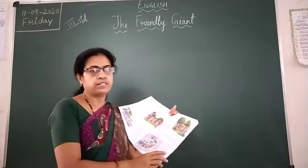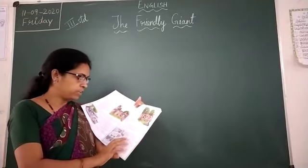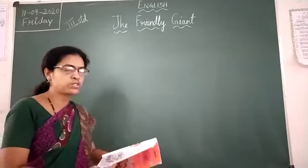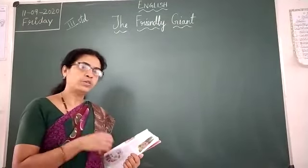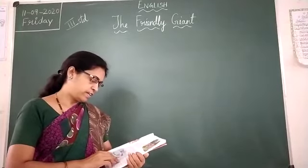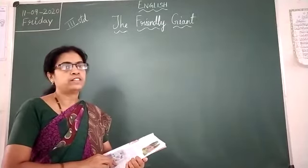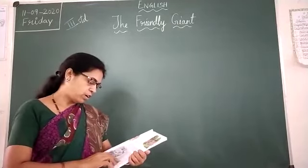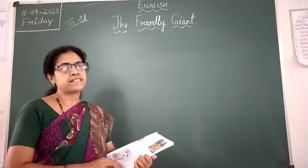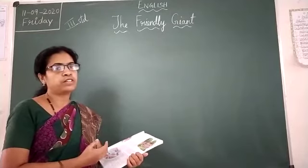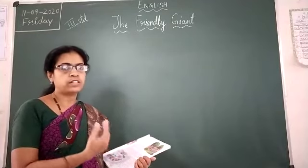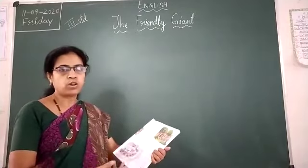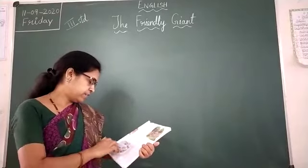Autumn came to every garden, but not to the Giant's garden. 'He is too selfish,' they said. So it was always winter there. The North Wind, the hail, and the frost and the snow were dancing in the Giant's garden — because they were going to be there for the whole year and they were enjoying there.